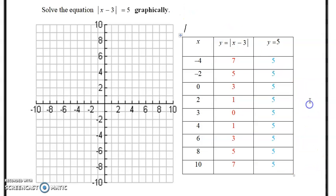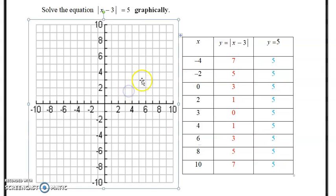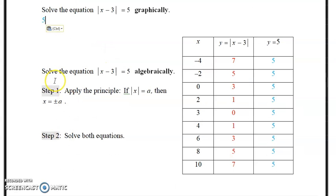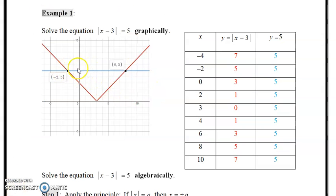So the ones that are the same are your intersection points here and here, as you're going to see in the graph. Graphically, here's your solution. So the two values that will work would be negative 2 because negative 2 subtract 3 is negative 5. Absolute value of negative 5 is 5. And 8 subtract 3 is 5. So pretty straightforward.